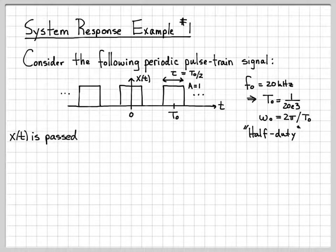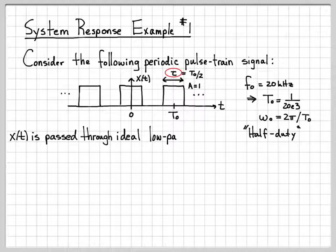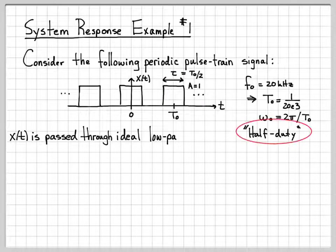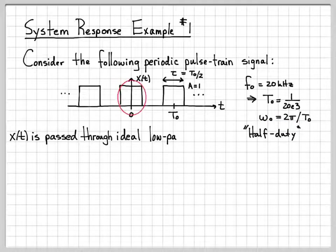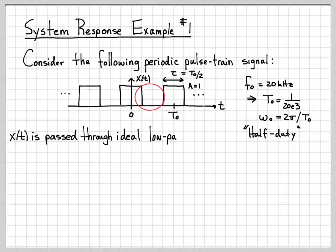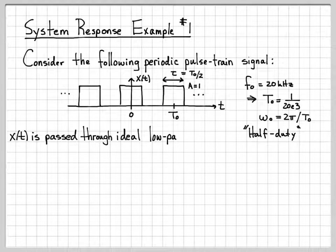Also note, based on how we parametrized x of t by letting tau equal t0 over 2, this is what we call a half-duty waveform, meaning that it is on for half the time, and then it is off for half the time, and then it is on. So half the time this pulse train is on, half the time it's off, so it's half-duty. Duty, referring to what we call the duty cycle, the percentage of time a signal is on.